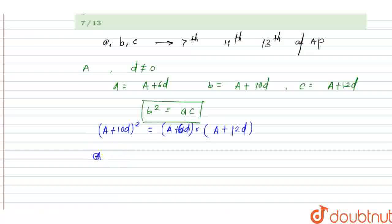When we solve this, we get A² + 100d² + 20Ad = A² + 12Ad + 6Ad + 72d².